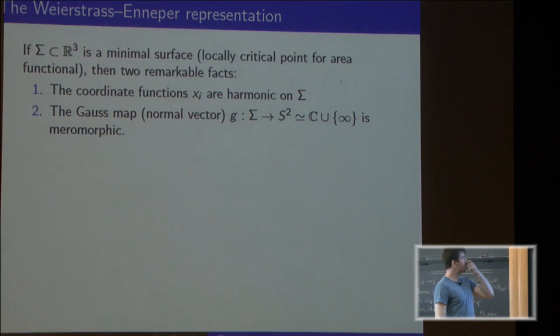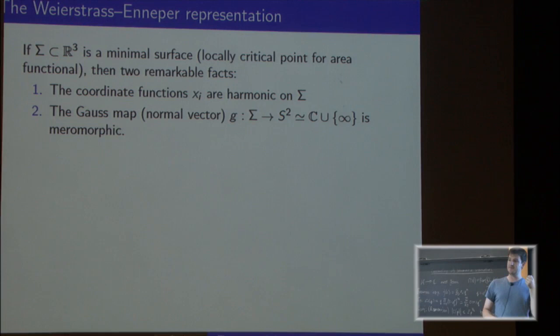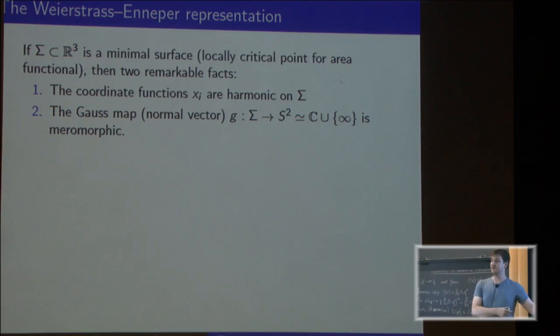The fact that there's always a soap film, mathematically speaking, was only proven in the 1930s, right? So Jesse Douglas won the first Fields Medal for that proof. But actually, the idea of minimal surfaces is much, much older. And that's because of the following two things. So if you have a minimal surface in R3, so just if you wiggle a little bit, the area doesn't change to first order. There's two things which are quite amazing about such a surface.